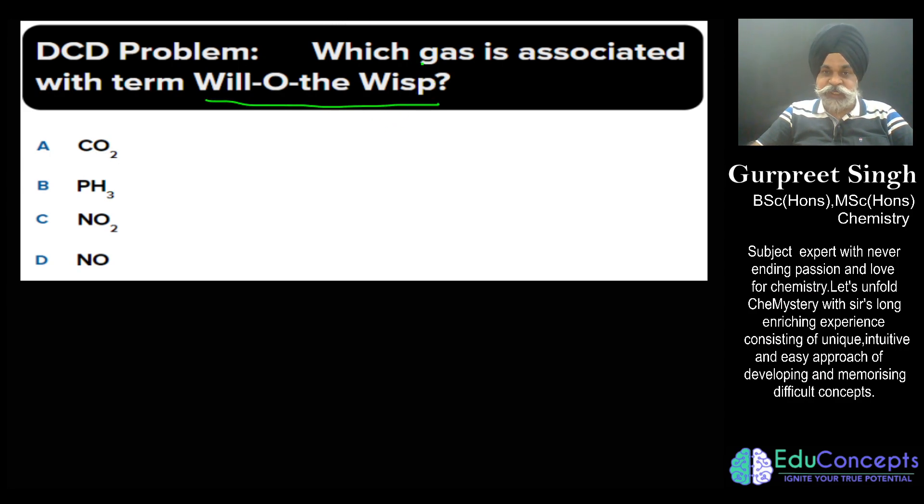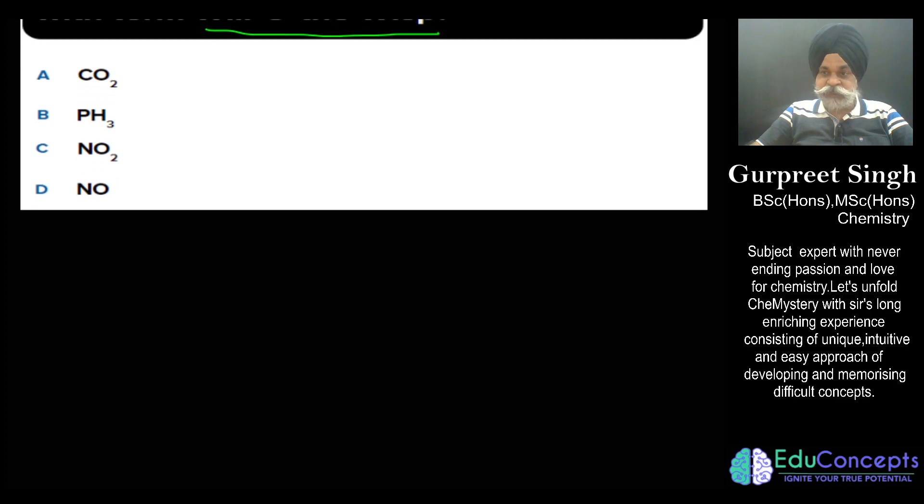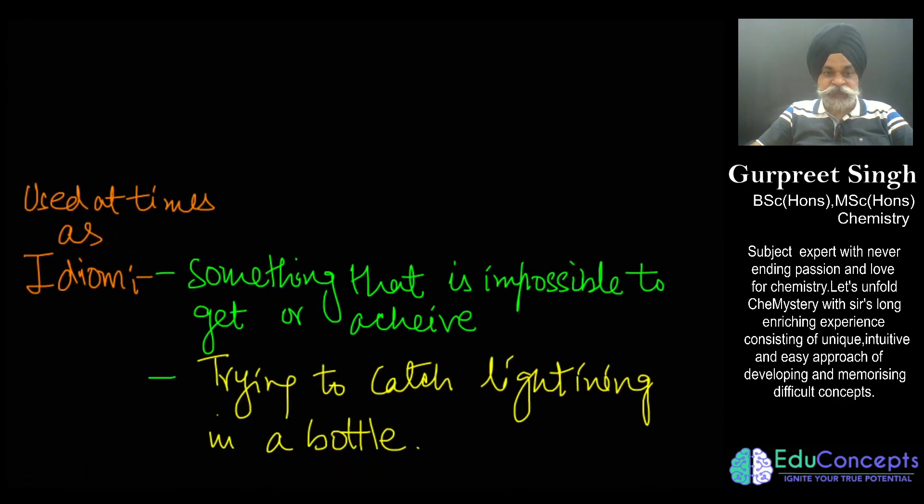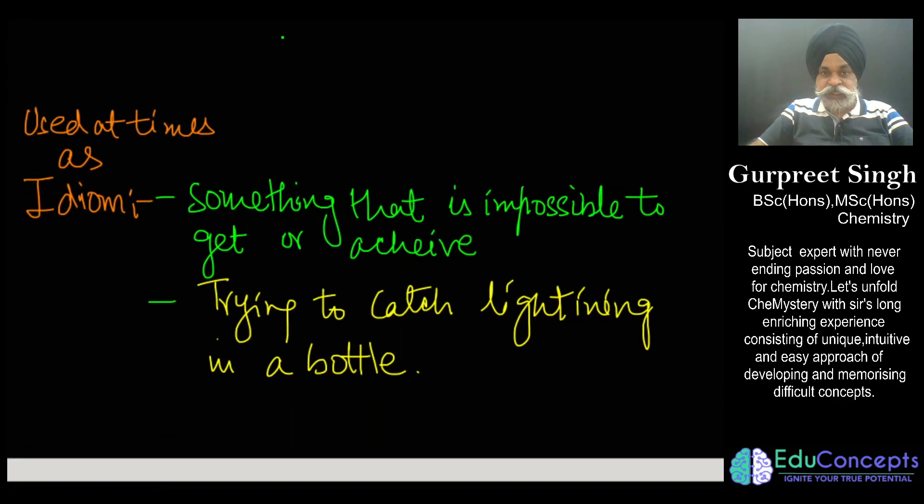Now let us understand what exactly it is. This particular term will-o'-the-wisp is also being used in English at times as an idiom where it simply would mean something which is impossible to achieve or to get, or when you are striving very hard for something and you are feeling that it is not achievable, we use this type of phrase.